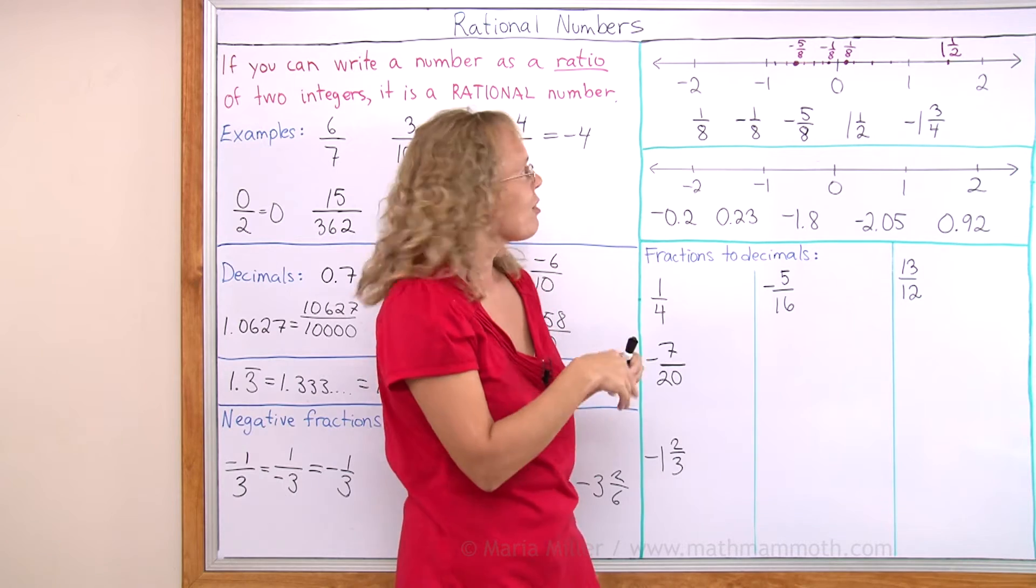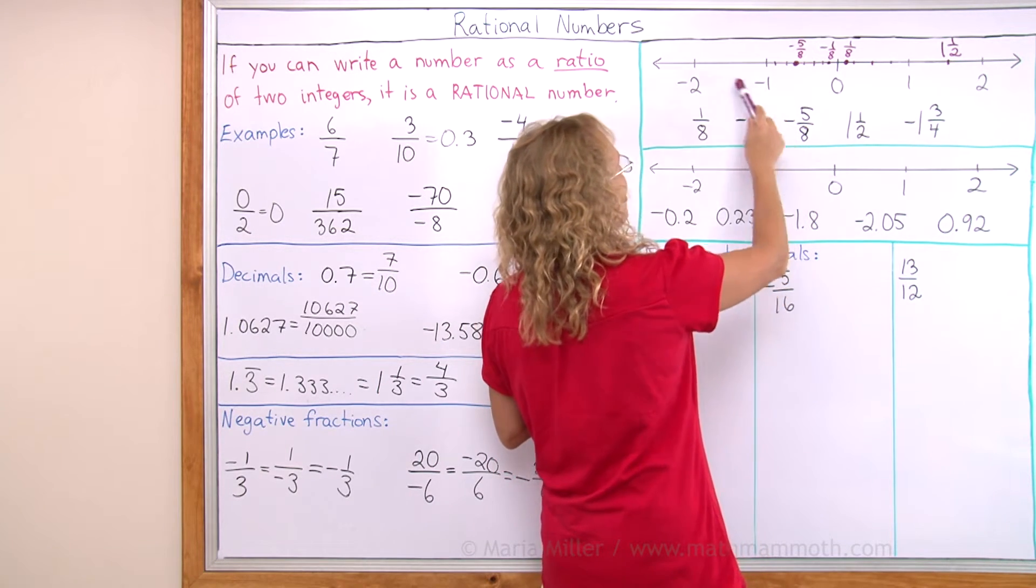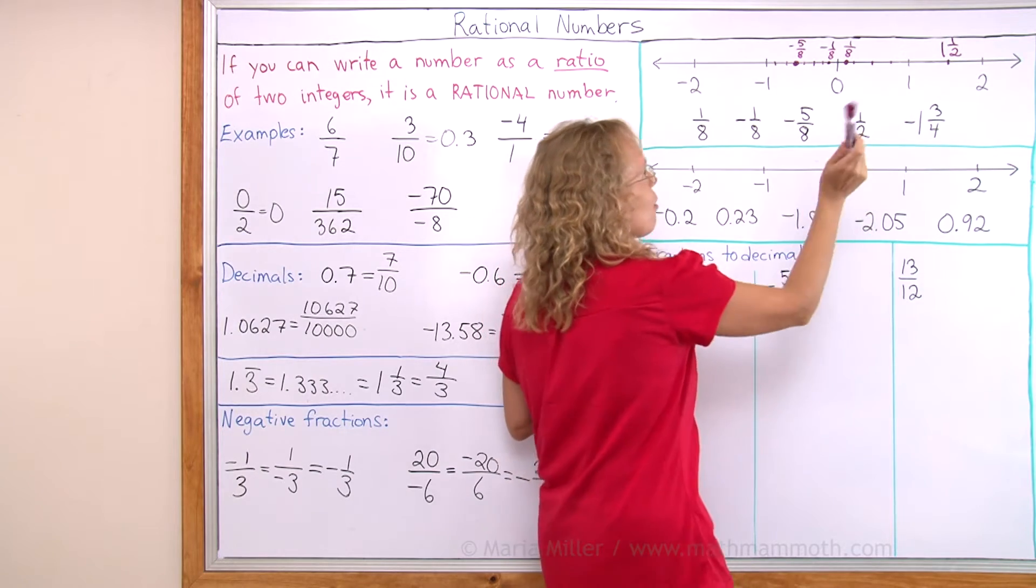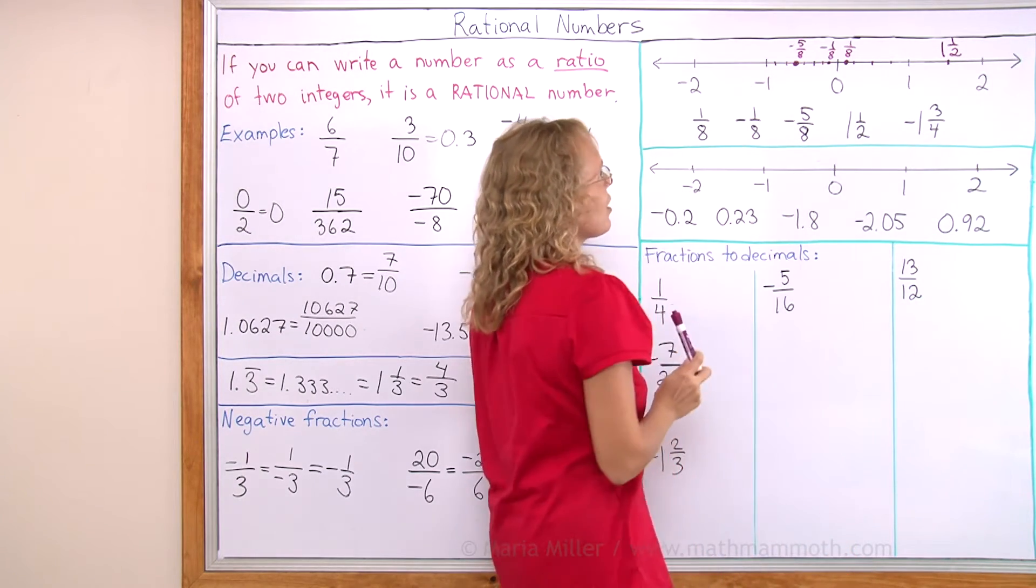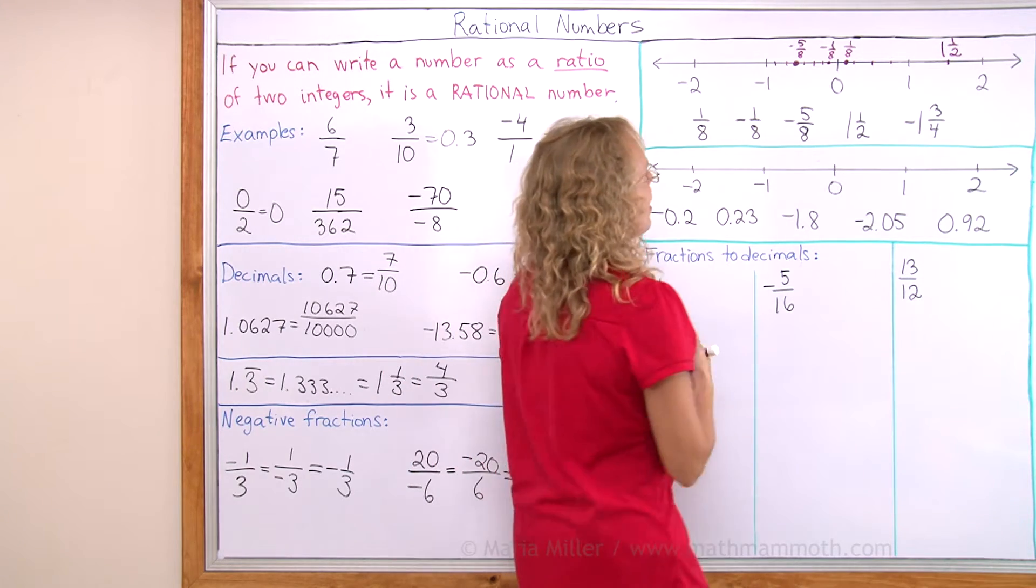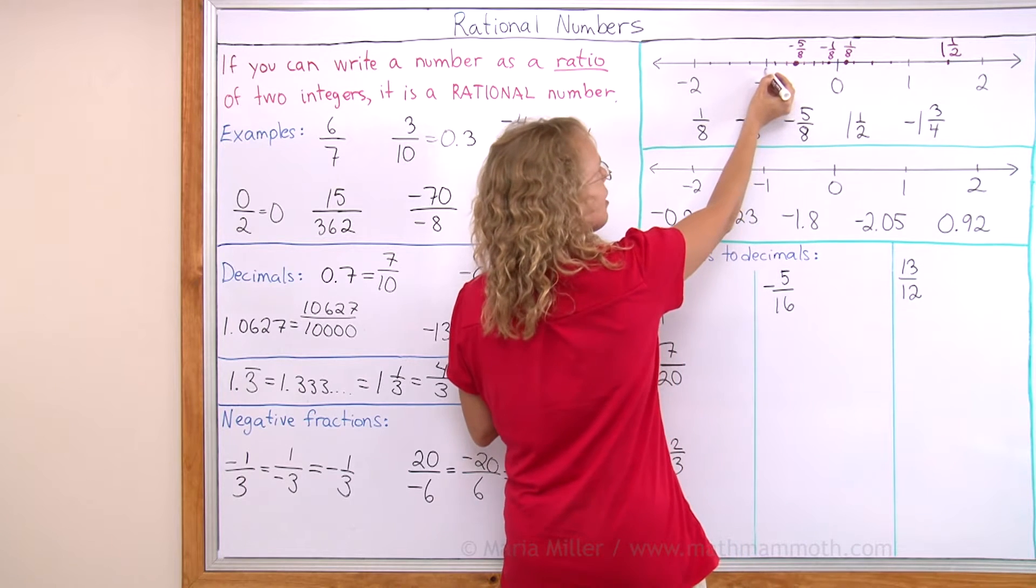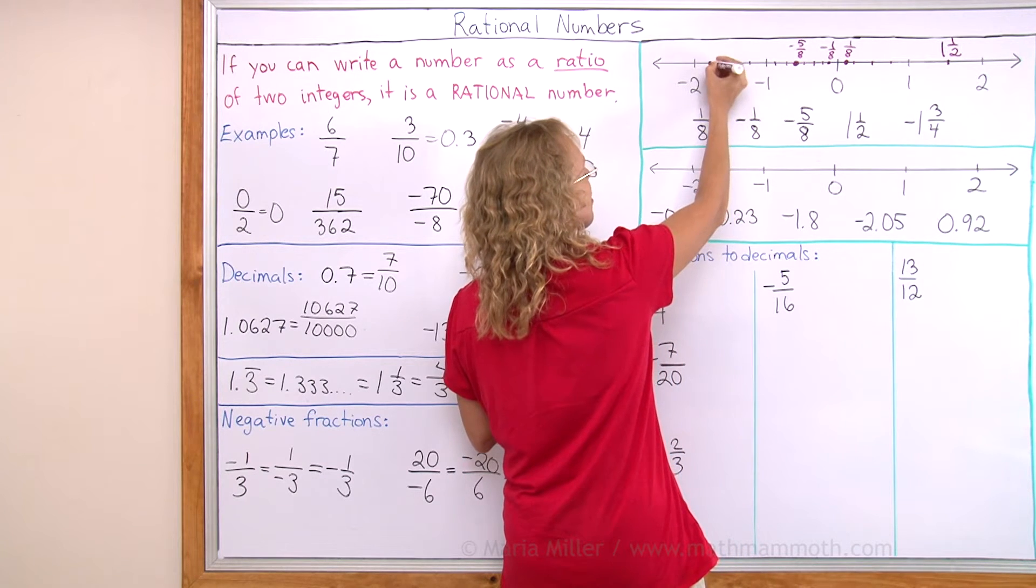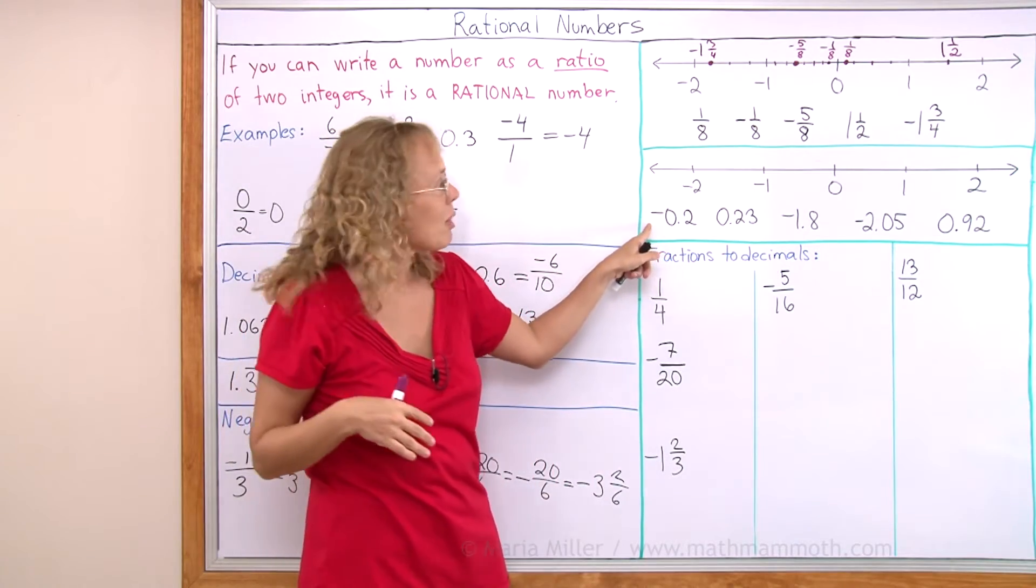Negative 1 and 3/4. Okay, that is past negative 1. It's between negative 1 and negative 2. Just like 1 and 3/4 would be here, it's on the opposite side, as if mirrored. And let me divide this into 4 parts here. So I go to negative 1 and then 3/4 further. Right there is negative 1 and 3/4.